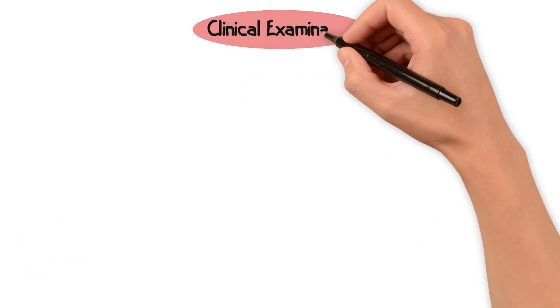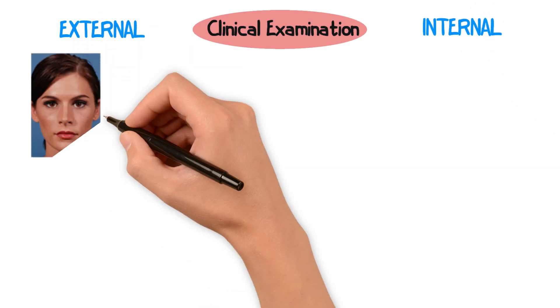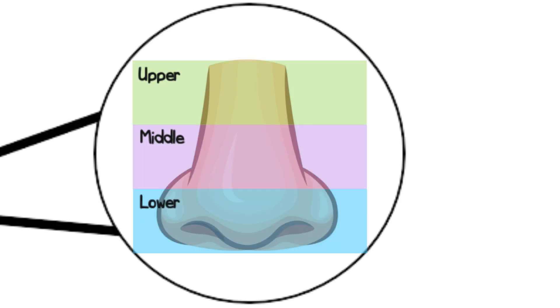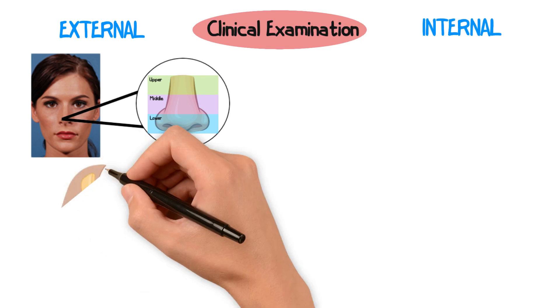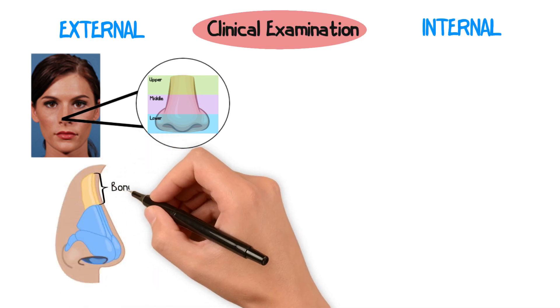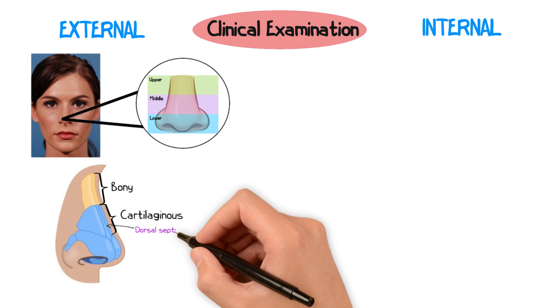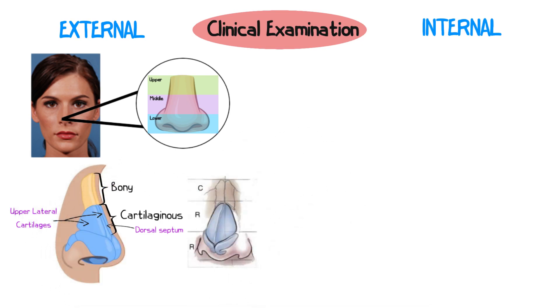Clinical examination comprises two parts: an external and an internal nasal examination. For the external portion, examine the nose in thirds — the upper, middle, and lower thirds — then in relation to the rest of the face. The upper one-third is bony, the mid-third is cartilaginous, made up of the dorsal septum and upper lateral cartilages, and it may have a hump or be twisted.